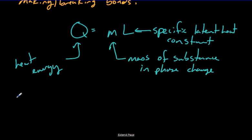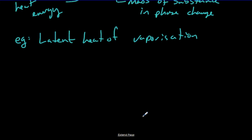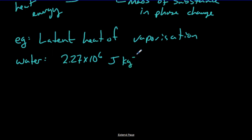The latent heat of vaporization is the heat required to vaporize a substance. For water, that value is 2.27 times 10 to the 6 joules per kilogram — that's 2.27 million joules per kilogram. You'll notice that's significantly higher than the specific heat of water, which was around 4,800 joules per kilogram — we're basically two orders of magnitude higher. It takes two orders of magnitude more energy to vaporize a kilogram of water than to raise it one degree Celsius.